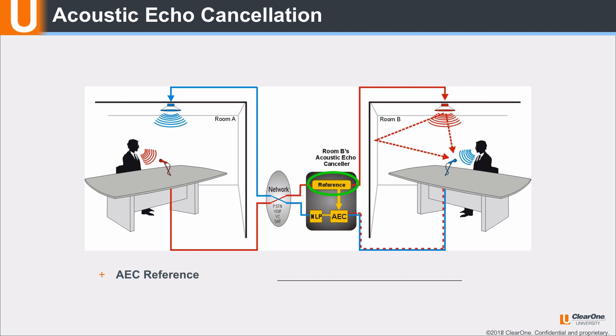The AEC reference tells the echo canceler what to cancel or remove from the transmission path. After the audio coming from room A is sampled, it continues to the speakers in room B, where it is picked up by the microphones. This audio or acoustic echo is now part of the transmission path, which is sent to the AEC along with the room B talker audio. The AEC reference signal is inverted and is also sent to the AEC. The AEC digitally subtracts these two equal but opposite signals, eliminating the acoustic echo from the transmission path.